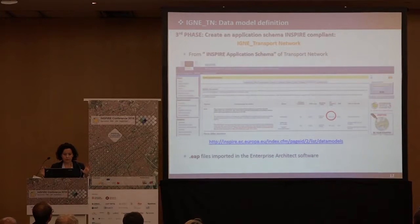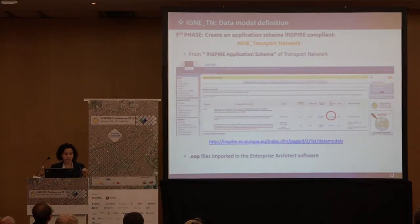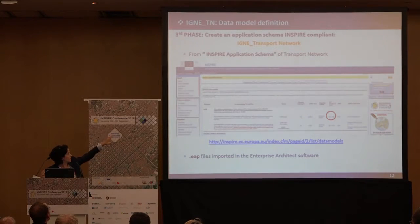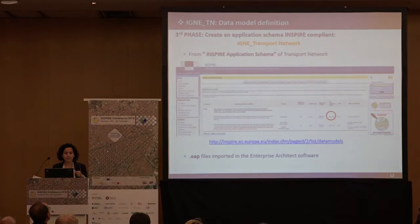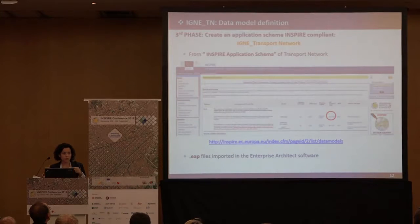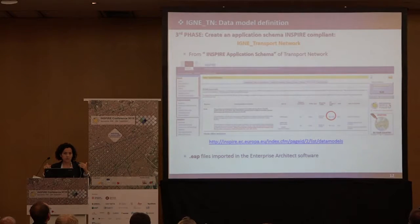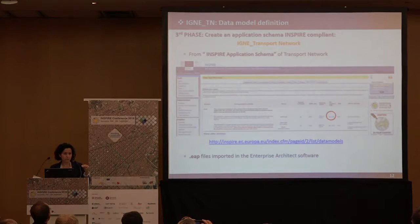Our application schema, of course, must be INSPIRE compliant. This is the name that we have given it: IGN transport network. It has been built from the INSPIRE application schema of transport network. We decided that the best way was to start from the INSPIRE application schema — we downloaded the EAP files from the JRC website and imported them into Enterprise Architect software.